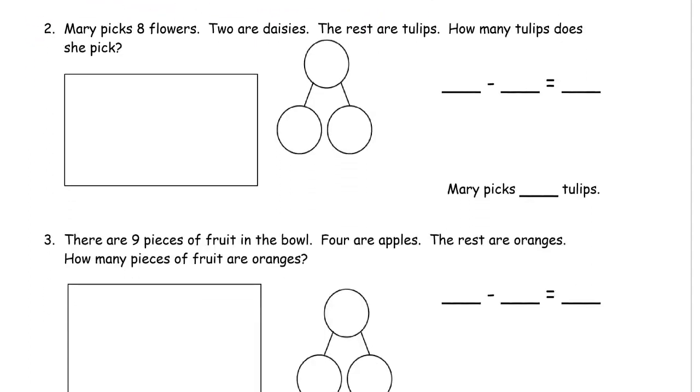Number two. Mary picks eight flowers. Two are daisies. The rest are tulips. How many tulips does she pick? These are daisies and tulips, different kinds of flowers. We know that two are daisies. We don't know how many are tulips. But we know if we draw all eight, and you can draw flowers. All my flowers are going to look the same because I'm not really an artist. I'm just making math pictures of things I can count.